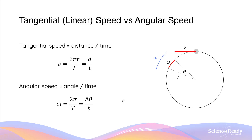In uniform circular motion there are two types of speed. The first is linear speed, or tangential speed. This refers to the red straight velocity vector, and this linear velocity changes as the mass undergoes uniform circular motion. We can calculate the velocity by taking the circumference 2πr divided by the period — the time taken for the object to complete one revolution. We can also take a short arc distance and divide it by the time taken to complete that particular segment, giving simply d divided by time.